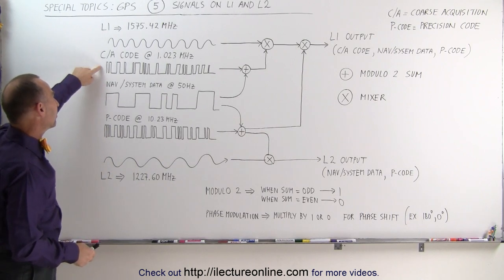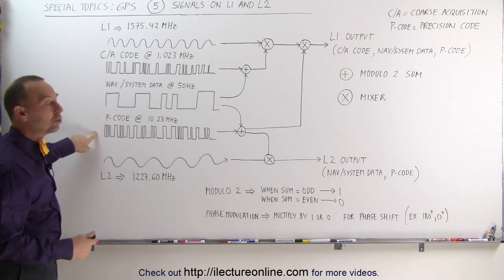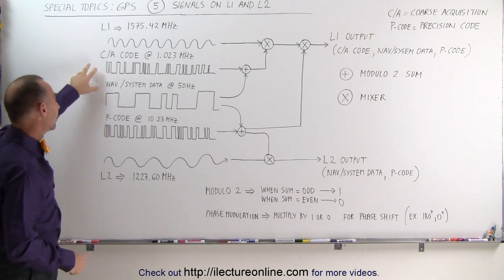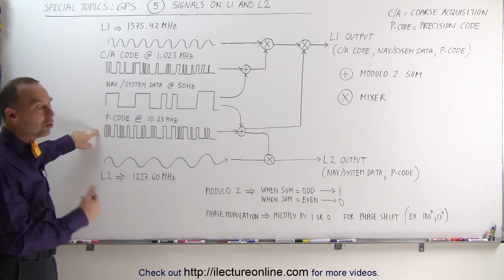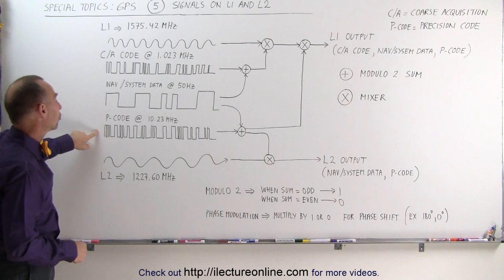So this is typically used by civilian use. The P code is typically used by military code, but we have some ways in which we can also use the information here for civilian use as well.